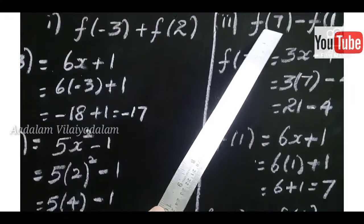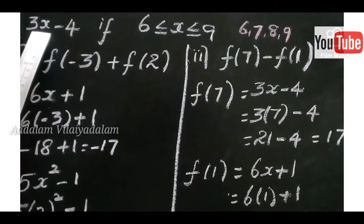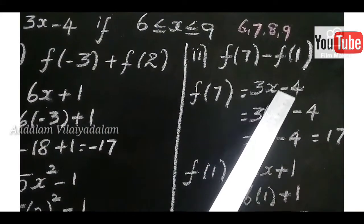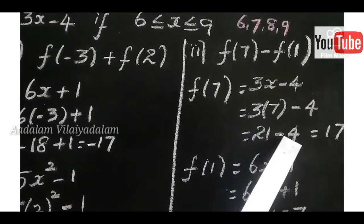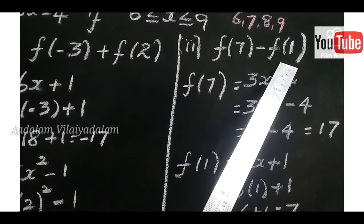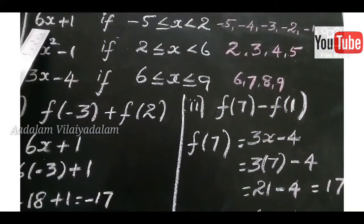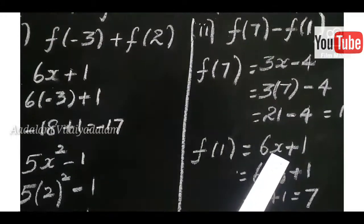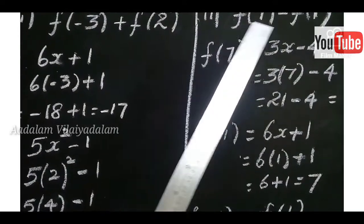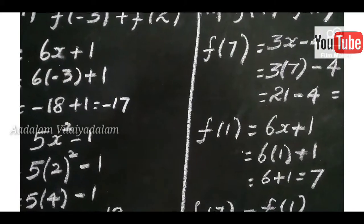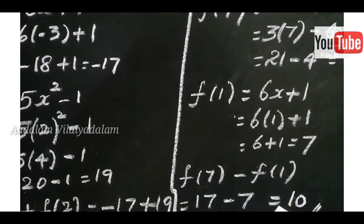Second subdivision: F of 7 minus F of 1. F of 7: 7 falls in the third function, F of X equals 3X minus 4. Substituting X equals 7: 3 into 7 minus 4 equals 21 minus 4 equals 17. F of 1: 1 falls in the first function, F of X equals 6X plus 1. Substituting X equals 1: 6 ones are 6, plus 1 equals 7. So F of 7 minus F of 1 equals 17 minus 7 equals 10.